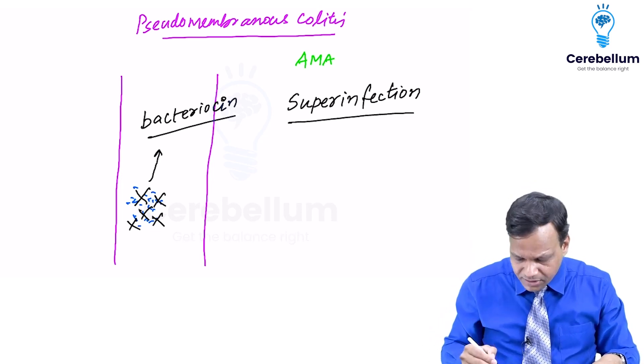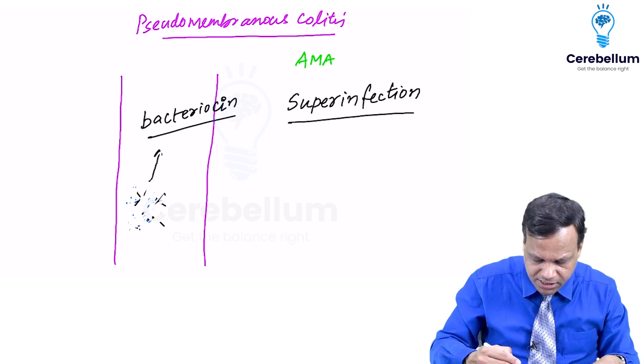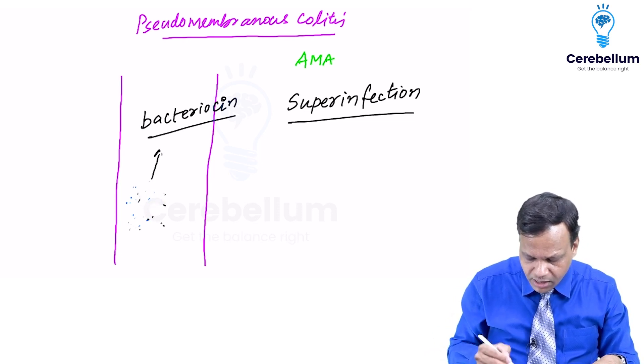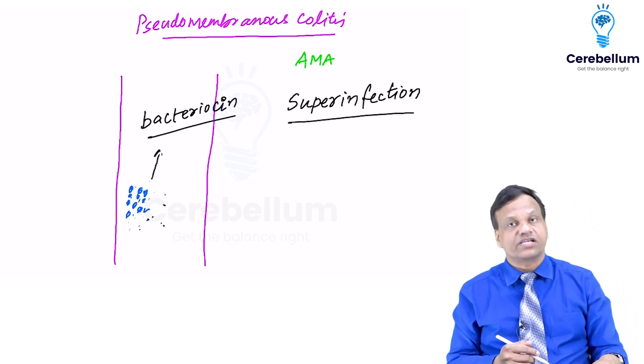So what has happened? The commensal bacteria has been killed. No protection in the GIT. So now the pathogenic bacteria take over. Pathogenic bacteria start causing infection.